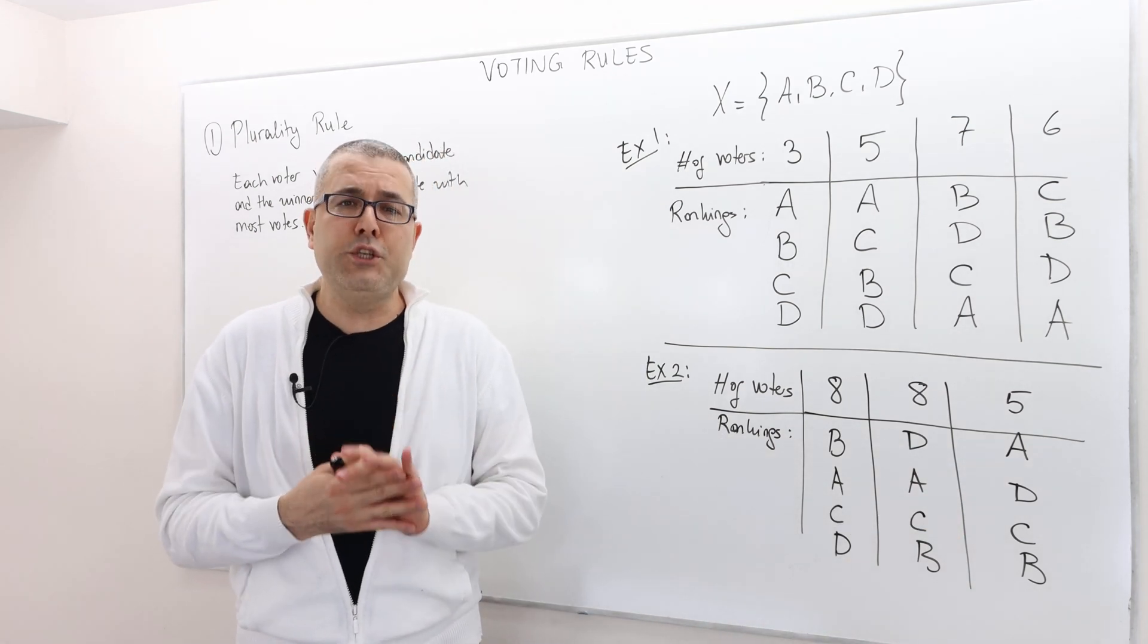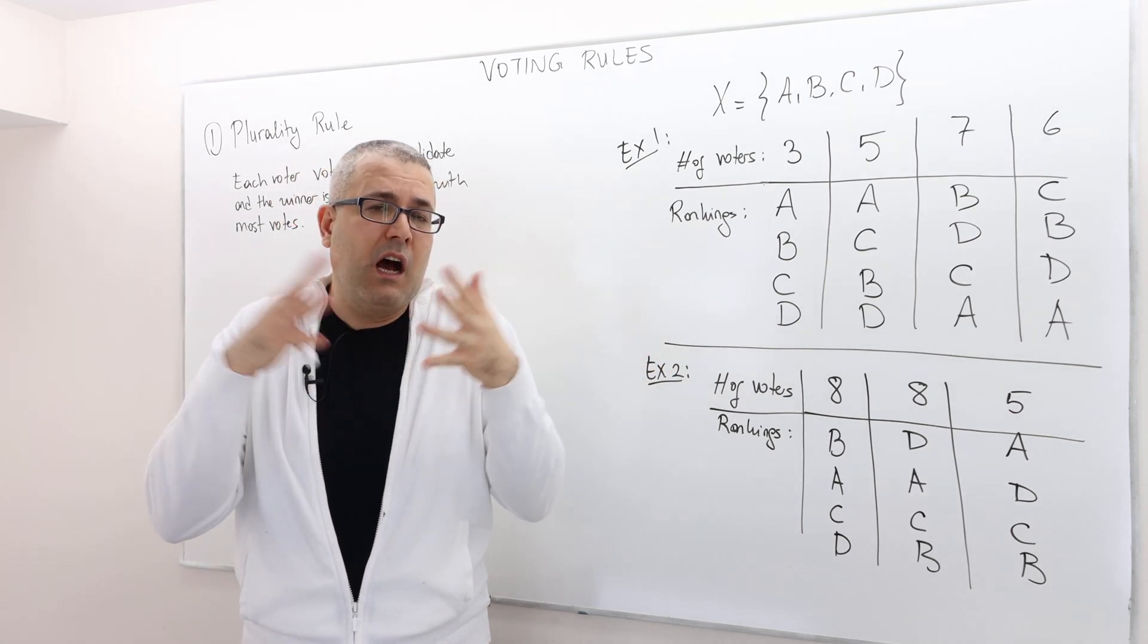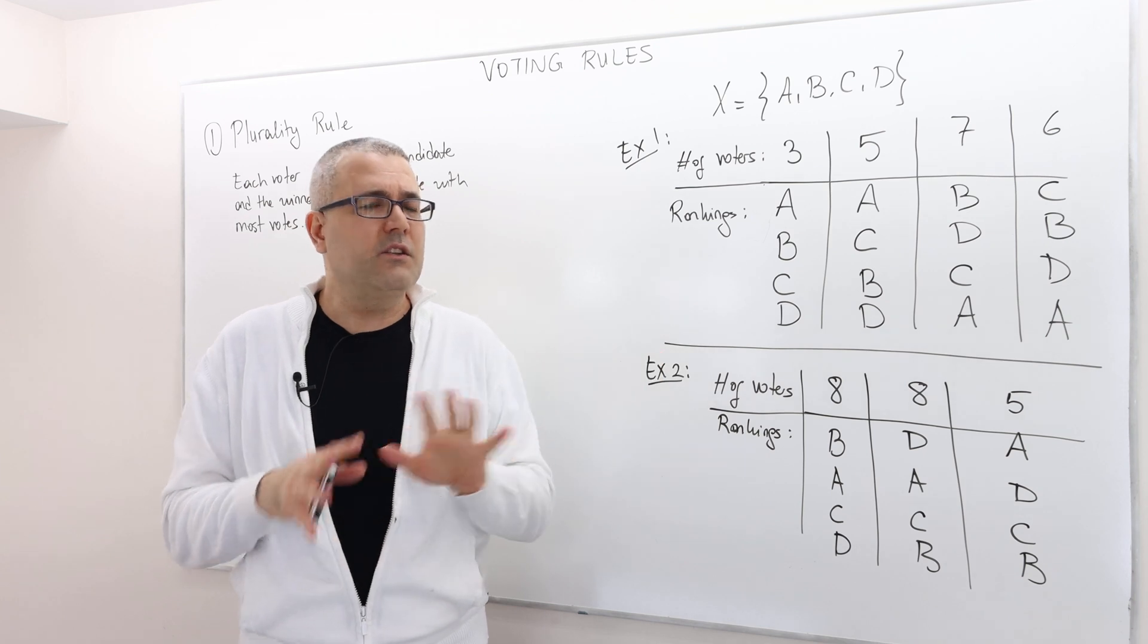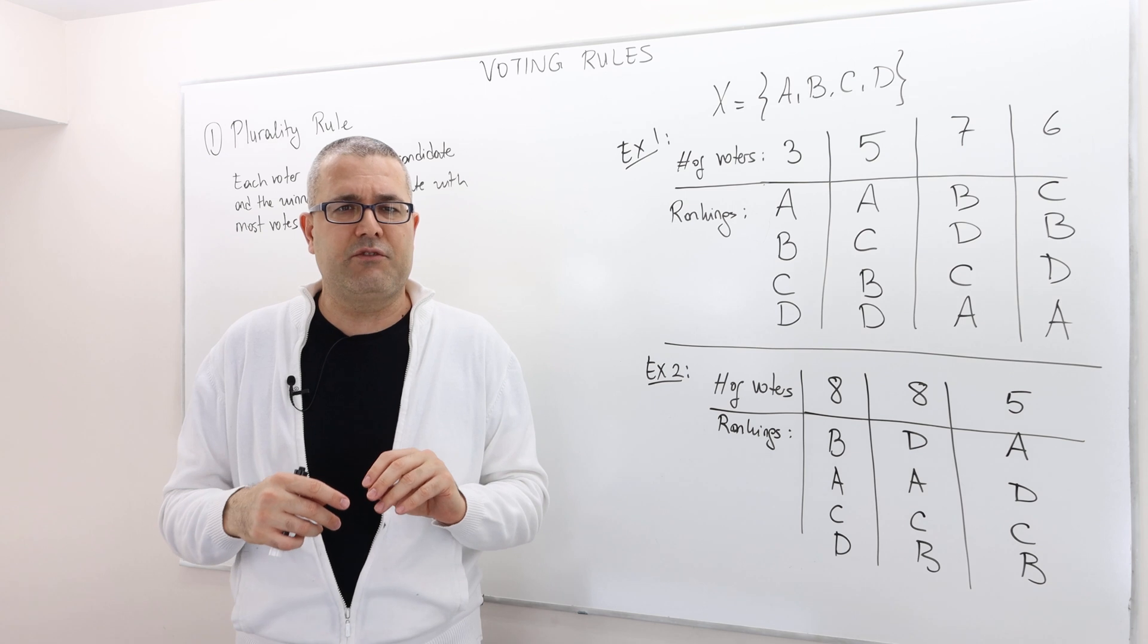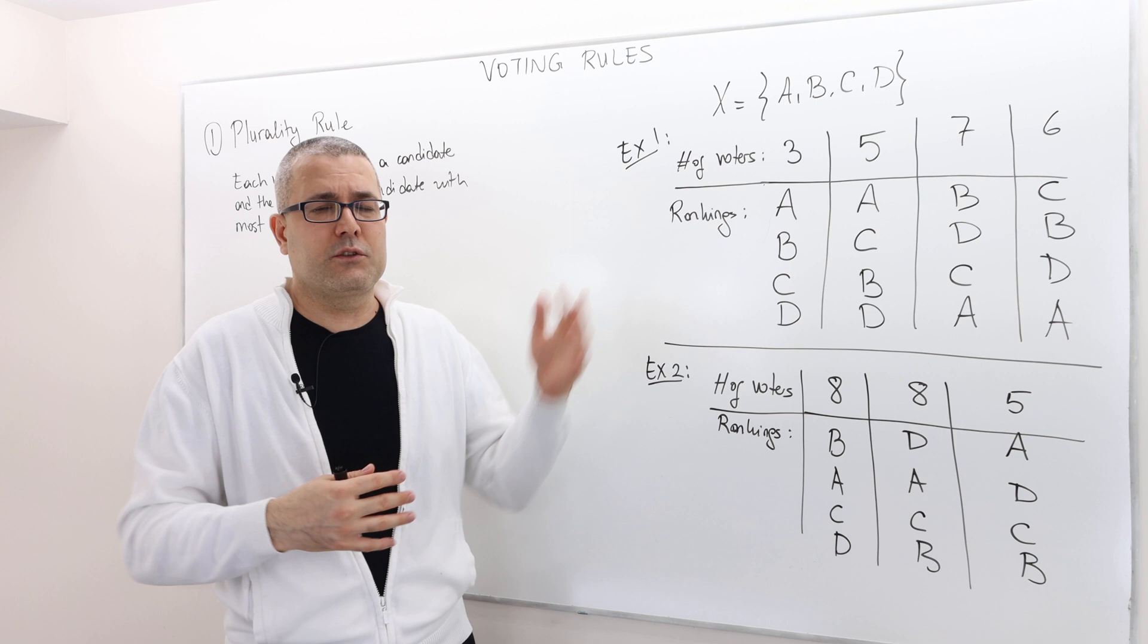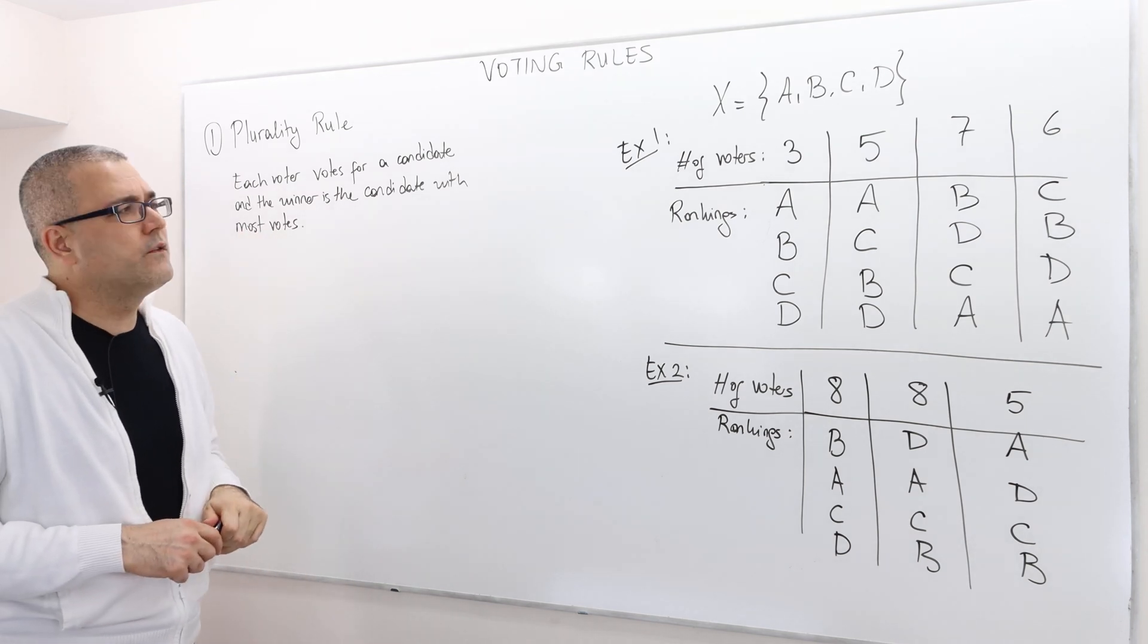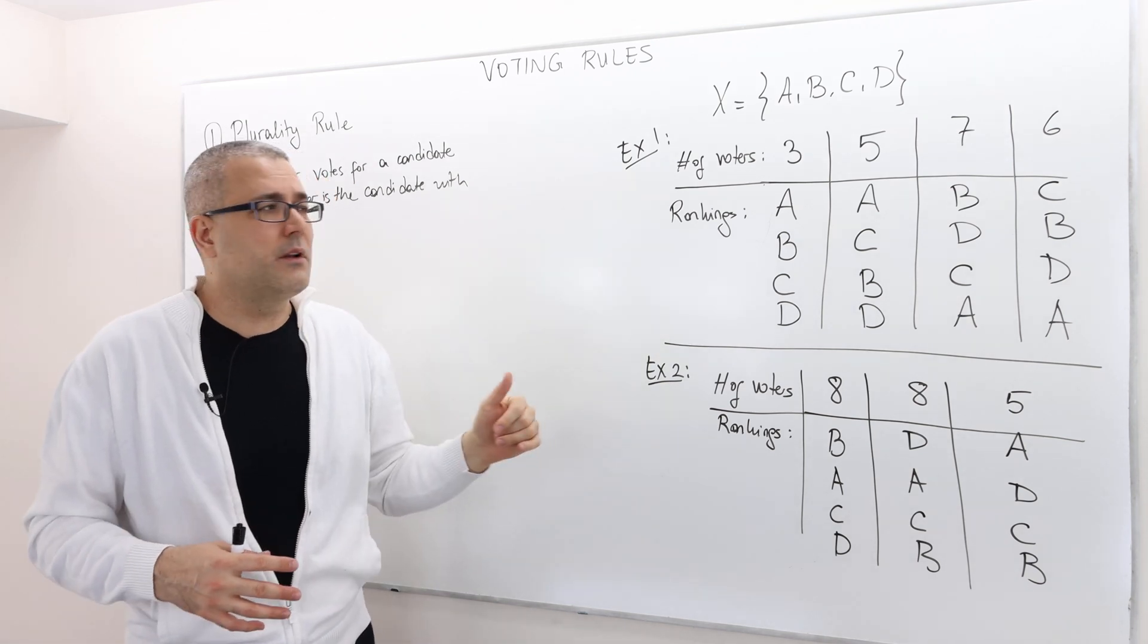Well, once again, don't forget, we assume that these rankings are either common knowledge or the voters truthfully reveal their rankings this way. So there's no strategic interaction here, meaning we ignore the strategic interaction. We assume that everybody truthfully reveal their preferences over the candidate in this way. In these two different examples, the plurality rule is going to give us a different outcome in each different example, obviously.